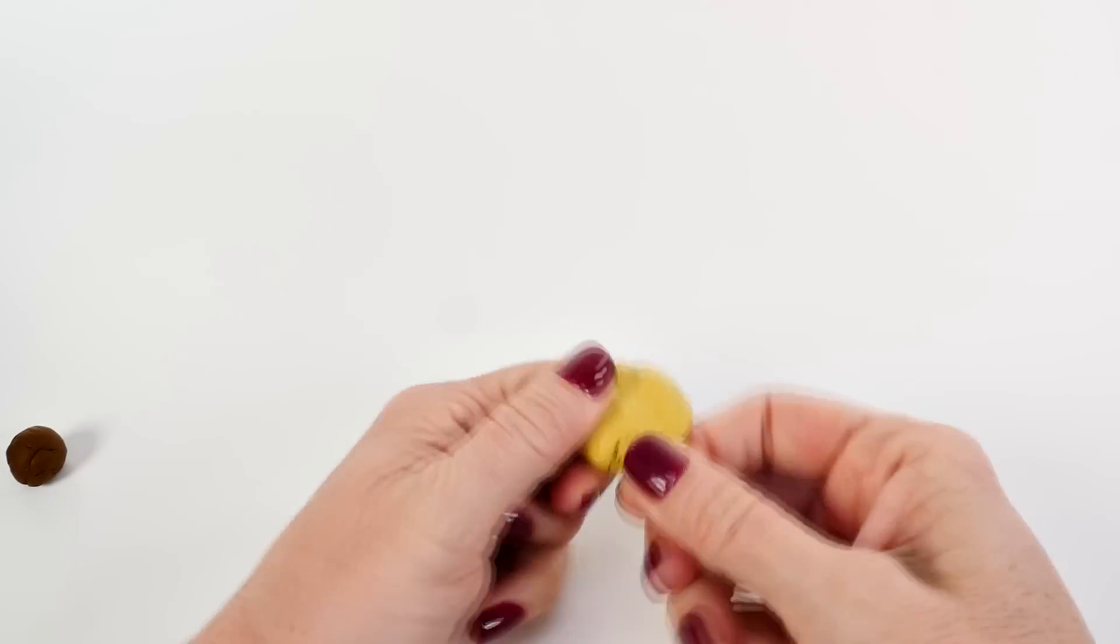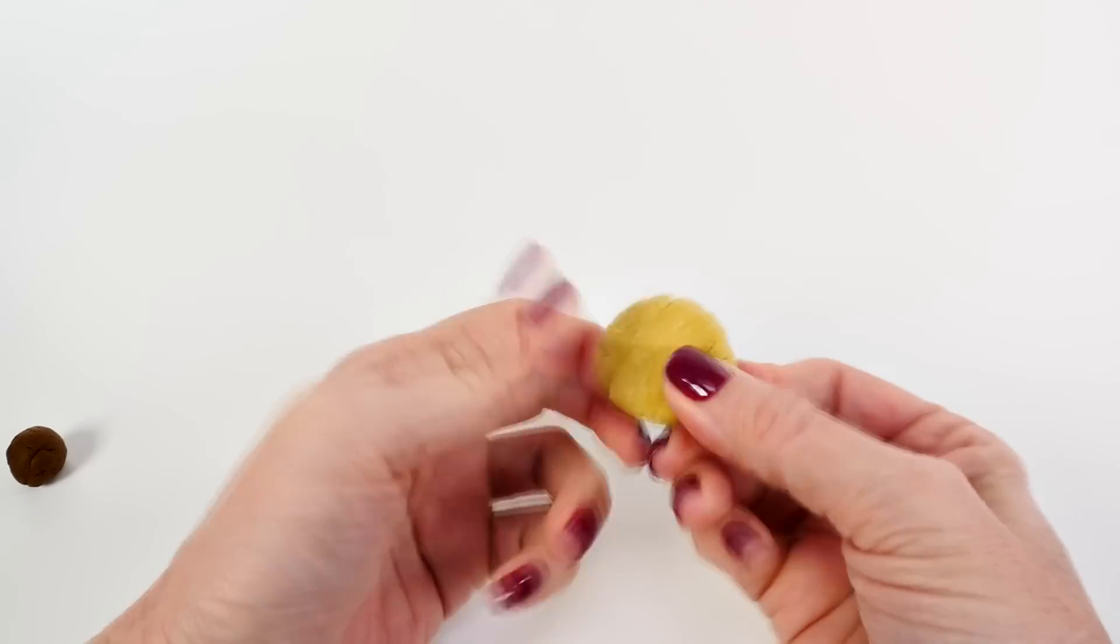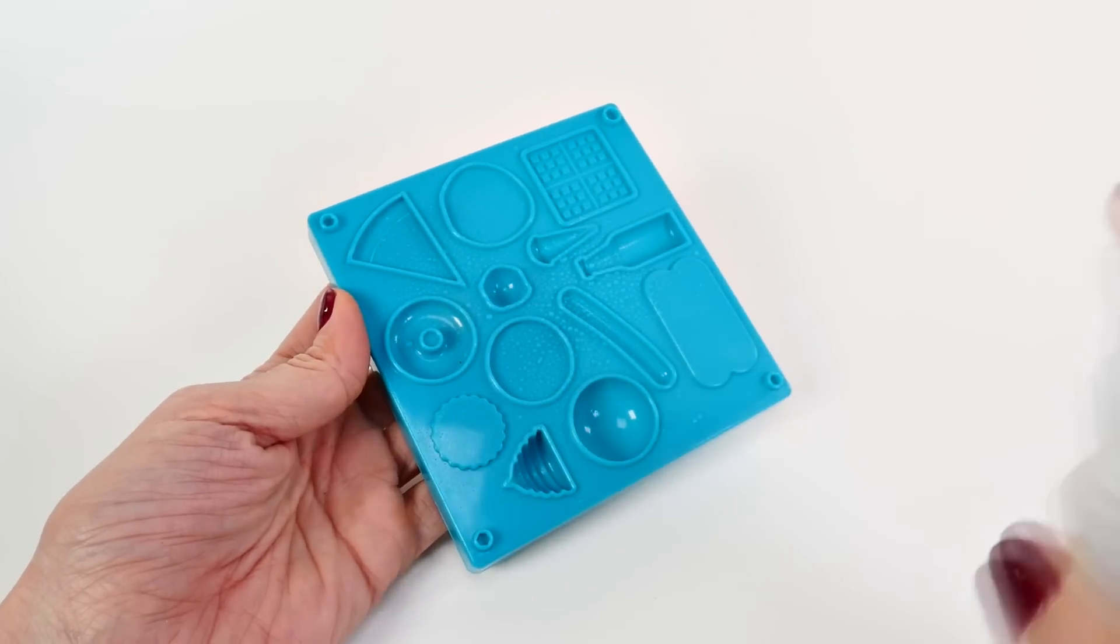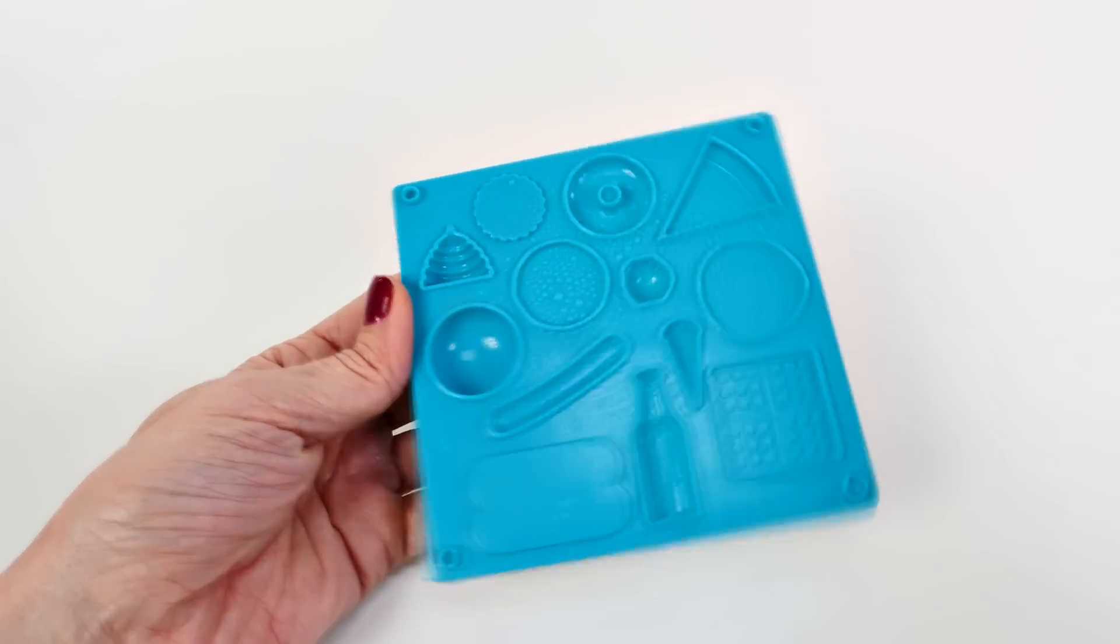After you get the clay or the putty all mixed together, it's ready to go into the mold. The directions say to either lightly mist or wipe down the mold with water to help so that the putty doesn't stick.